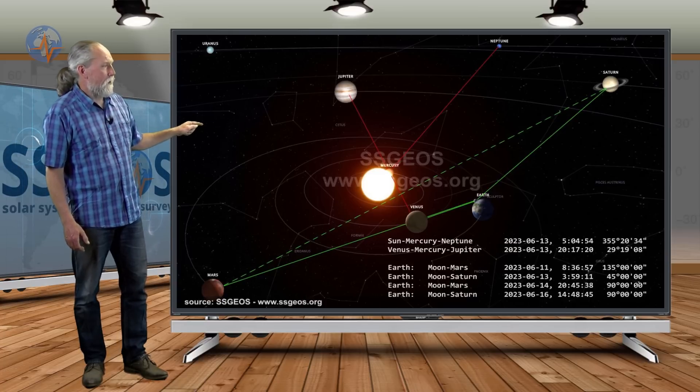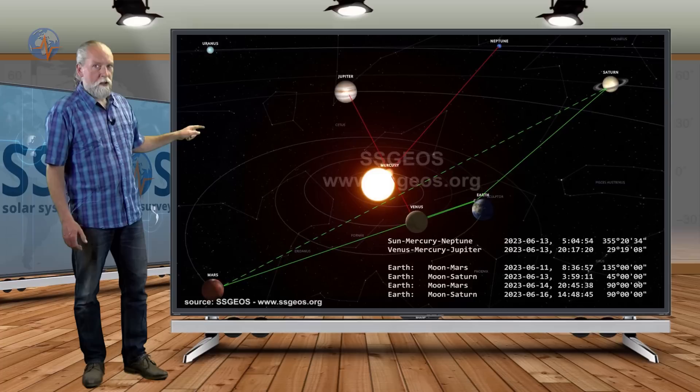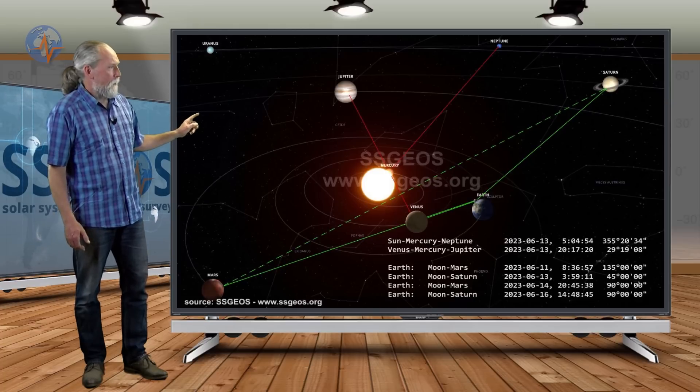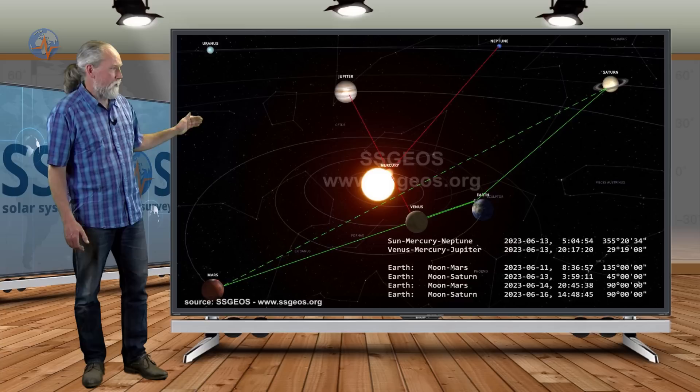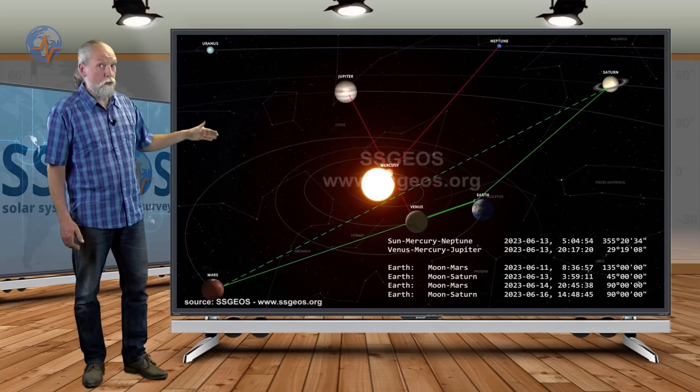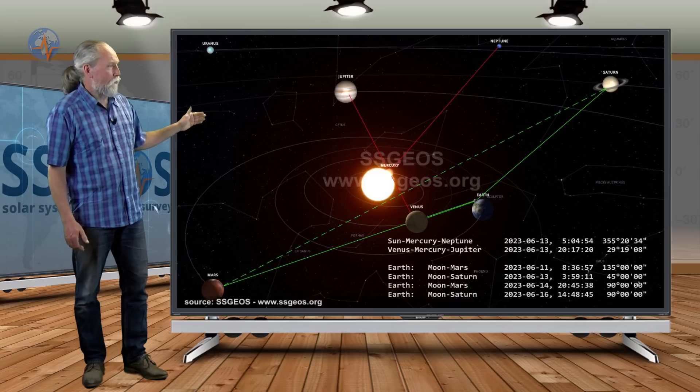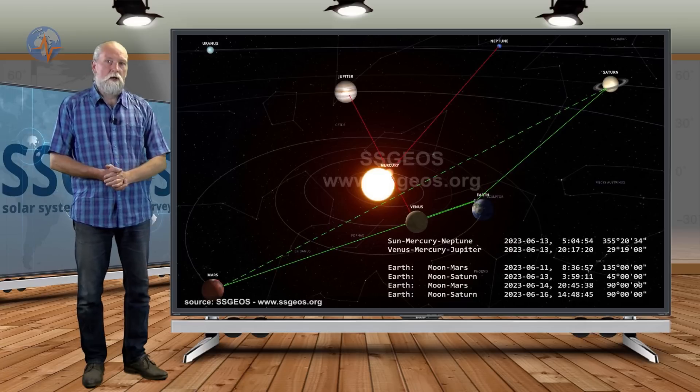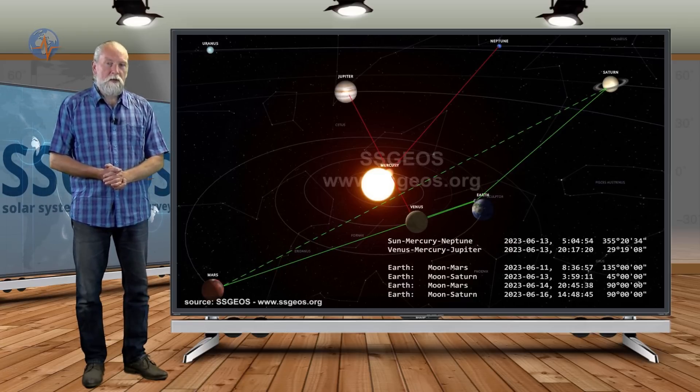Here we see that there will be semi-right angles between the Moon and these outer planets. On the 11th this happened. Then on the 13th that is already within two days. And then again on the 14th and 16th that will be right angles. It is going to be critical.